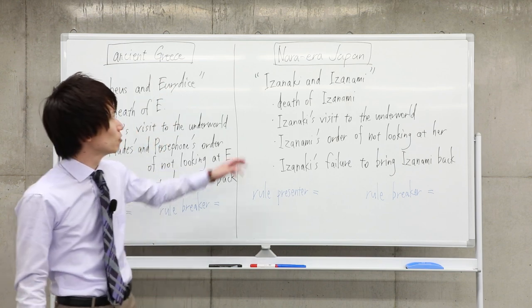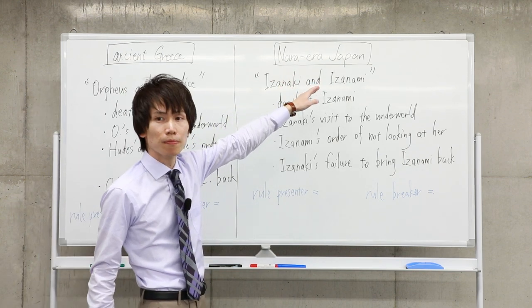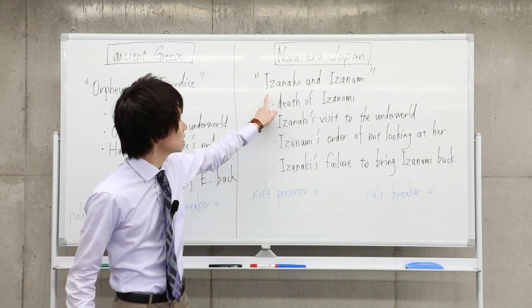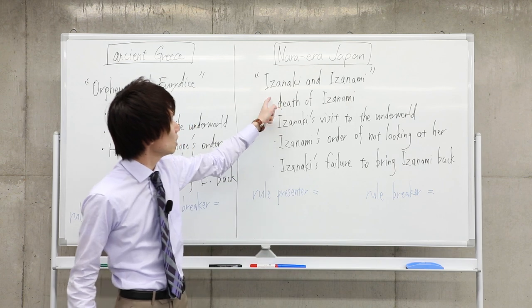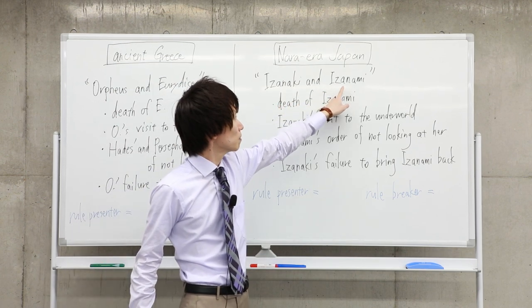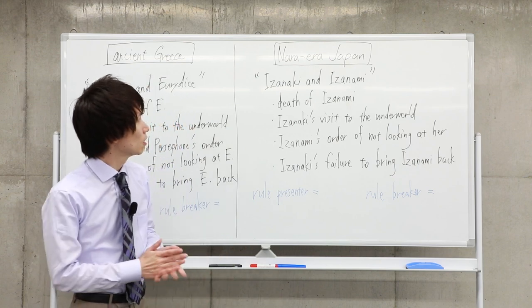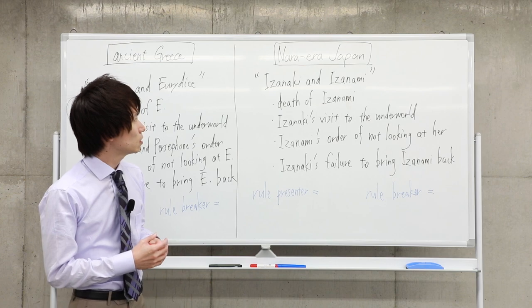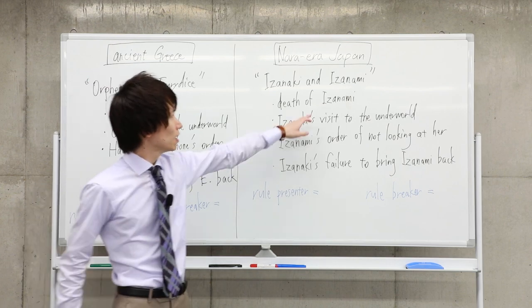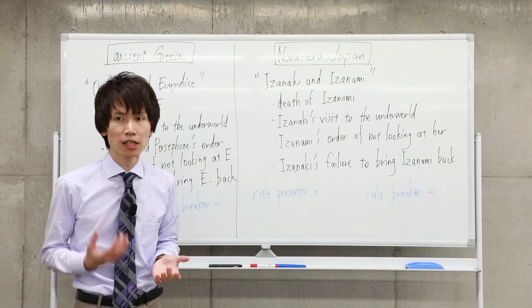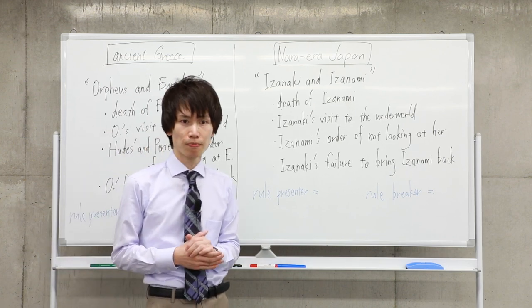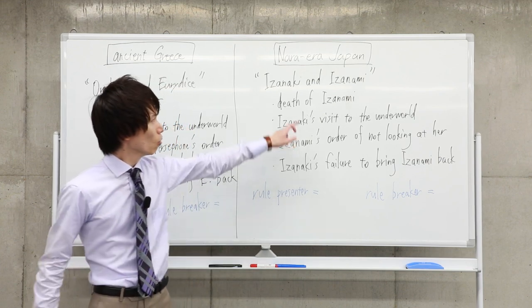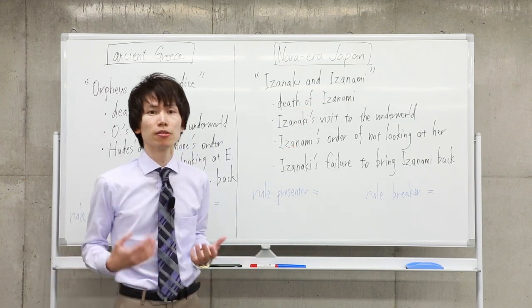Now let's move to the other story from Nara, Japan. This story is also about a married couple, Izanaki and Izanami. Izanaki is the husband and Izanami is his wife. The accident happens when Izanami gives birth to her child, a newborn child named Kagutsuchi, a god of fire.